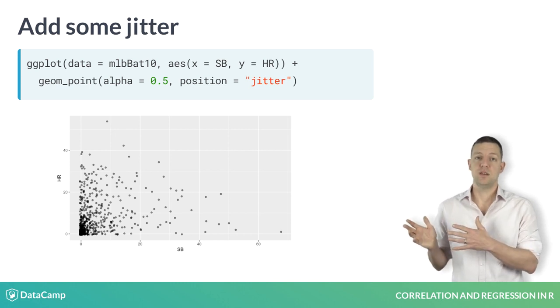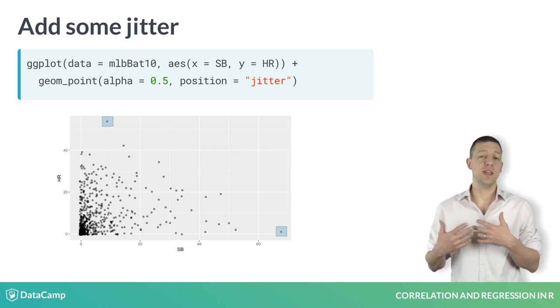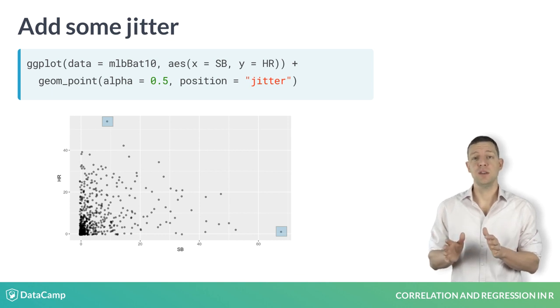In this plot, there are two points that stand out as potential outliers, the one in the lower right-hand corner and the one at the very top. We will discuss later in the course how to handle these outliers, but for now, it is enough to simply identify them and investigate them.